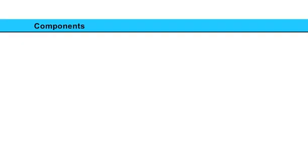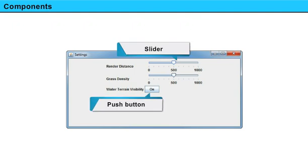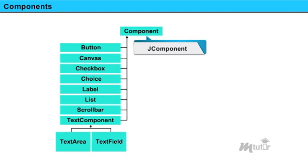A component is an independent visual control such as a slider or a push button. Swing provides a large set of components with rich functionalities and high-level customization. These Swing Components are derived from the class JComponent.